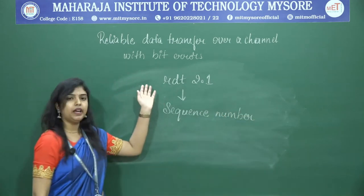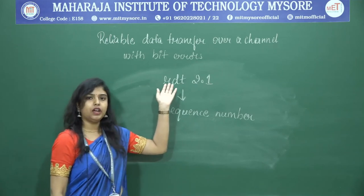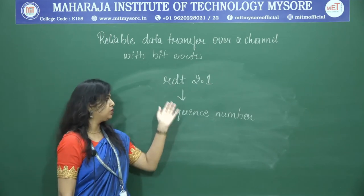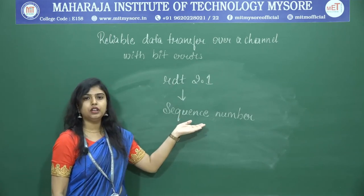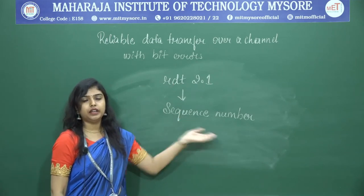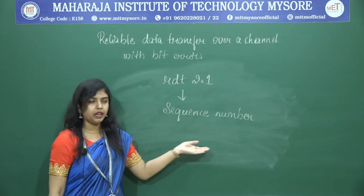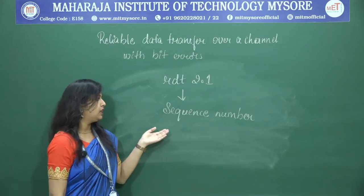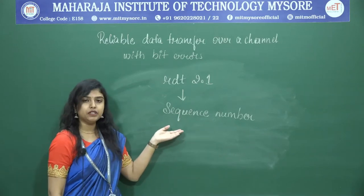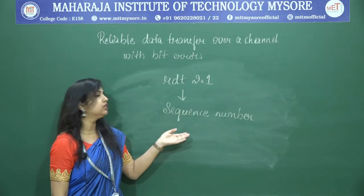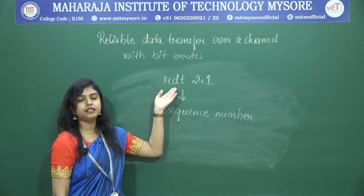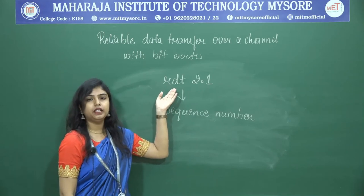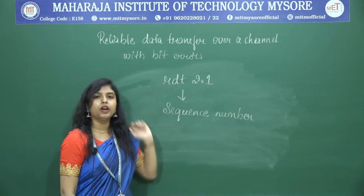The revised protocol — RDT 2.0 revised to address retransmitted packets by providing a sequence number solution — is called RDT 2.1.